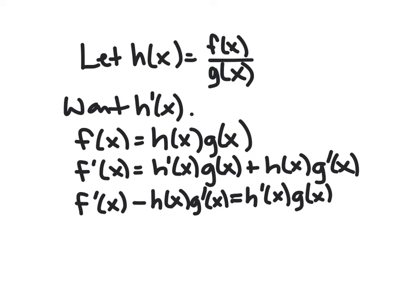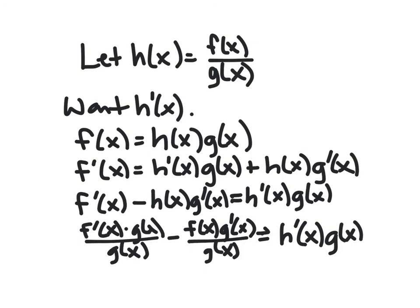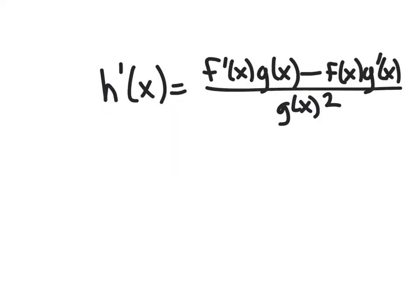Since h(x) = f(x)/g(x), we substitute and get a common denominator on the left: f'(x)·g(x)/g(x) − f(x)·g'(x)/g(x) = h'(x)·g(x). Combining the numerator on the left and dividing both sides by g(x), we end up with h'(x) = [f'(x)·g(x) − f(x)·g'(x)] / [g(x)]².